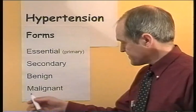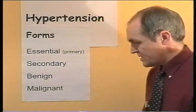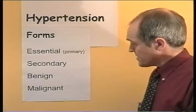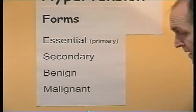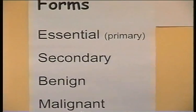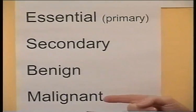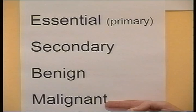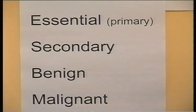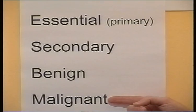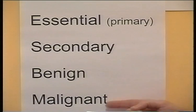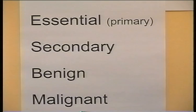In malignant hypertension, there is usually a history of benign hypertension, but then for some reason there is a very rapid, severe rise in blood pressure - it becomes life-threatening almost straight away. Studies in the United States have shown this is more common in black people than white people, but it can occur in anyone. A sudden severe rise in blood pressure is almost immediately life-threatening and would require fairly aggressive treatment.